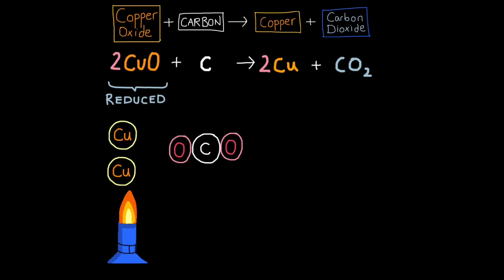Copper oxide is being reduced, but carbon is being oxidized because it's gaining an oxygen, so we're oxidizing carbon. So whenever you're presented with a chemical equation which shows reduction by carbon, remember, two things are going on here. It's not just reduction. The copper oxide, or the ore, is being reduced, but the carbon is always being oxidized to form carbon dioxide.